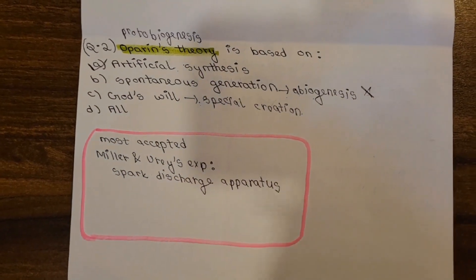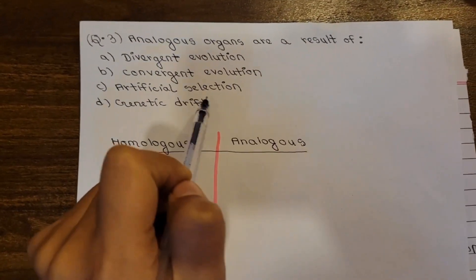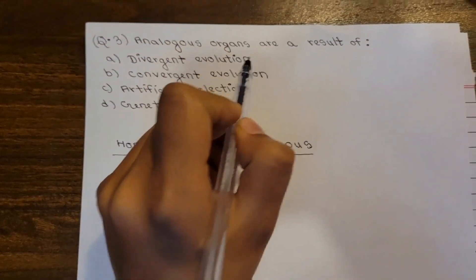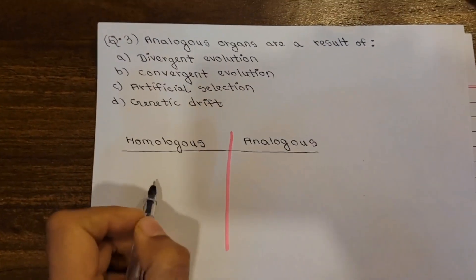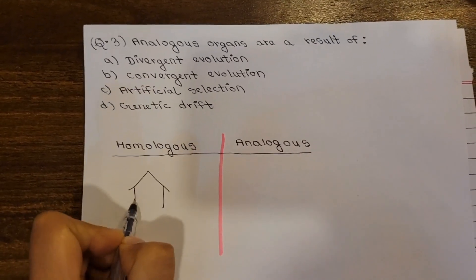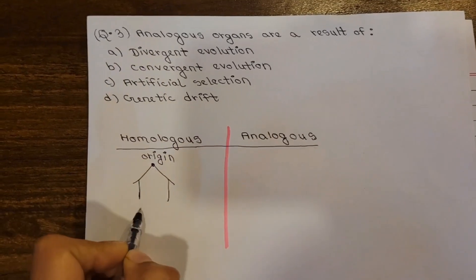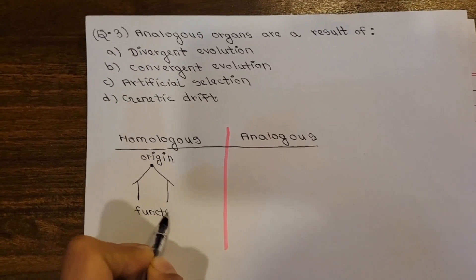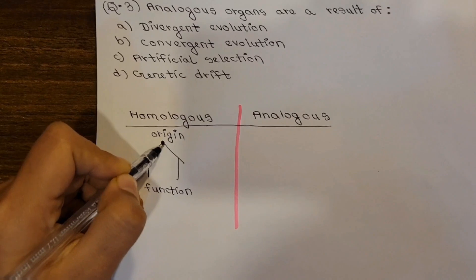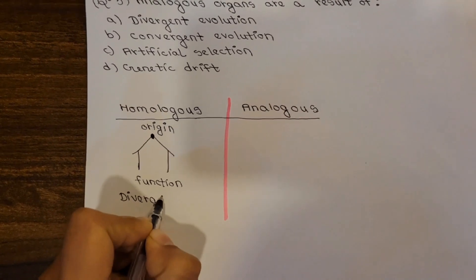Question number three: analogous organs are a result of — divergent evolution, convergent evolution, artificial selection, or genetic drift? To understand this, first let's clarify: homologous organs have the same origin but different functions. Analogous organs have a different origin but the same function. So the answer for analogous organs is convergent evolution.